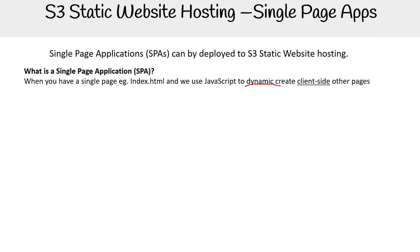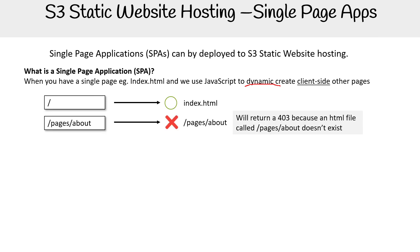The idea here is that when you have a single page application, everything has to go to the index HTML page. However, if you're going to put in those URLs into your browser, the forward slash is going to go to index HTML. And when you attempt to go to a dynamically generated page, such as pages forward slash about, you're going to get an error code — maybe a 403, maybe a 404.